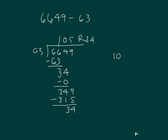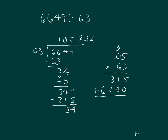And we can run our check. Three times five is fifteen — five, regroup of one. Three times zero is zero, plus one is one. Three times one is three. Place a zero. Six times five is thirty — zero, regroup of three. Six times zero is zero, plus three is three. And six times one is six. Add those together, and add in our remainder to see that the problem does check. So that's how you can divide.